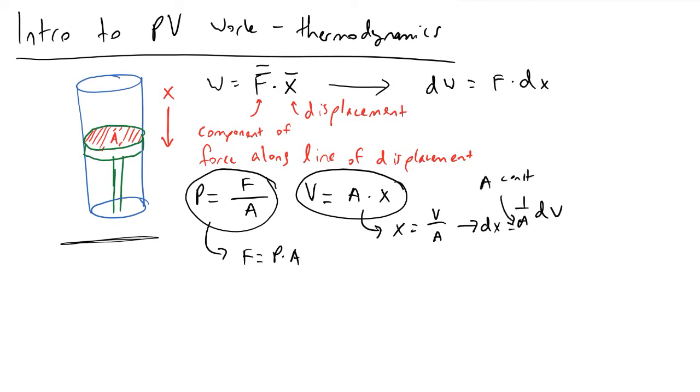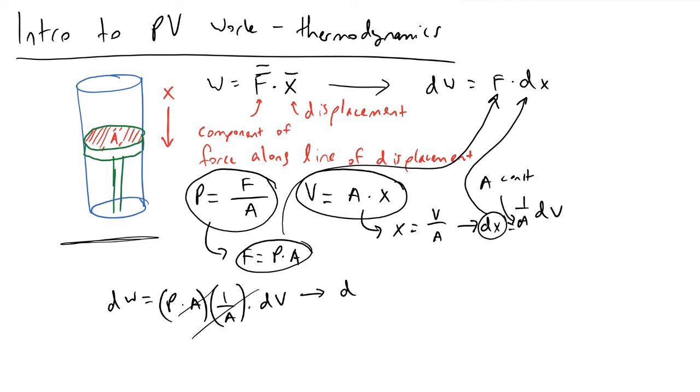If we were to plug in now our definitions of dx and force, what we will see is that the work done in our differential control volume will be equivalent to pressure times area, which was F, times dx, which was one over area times dV. What we'll recognize here when we have a constant area is that the area terms cancel out, and we're left with the change in work inside of our control volume is equivalent to P times dV.